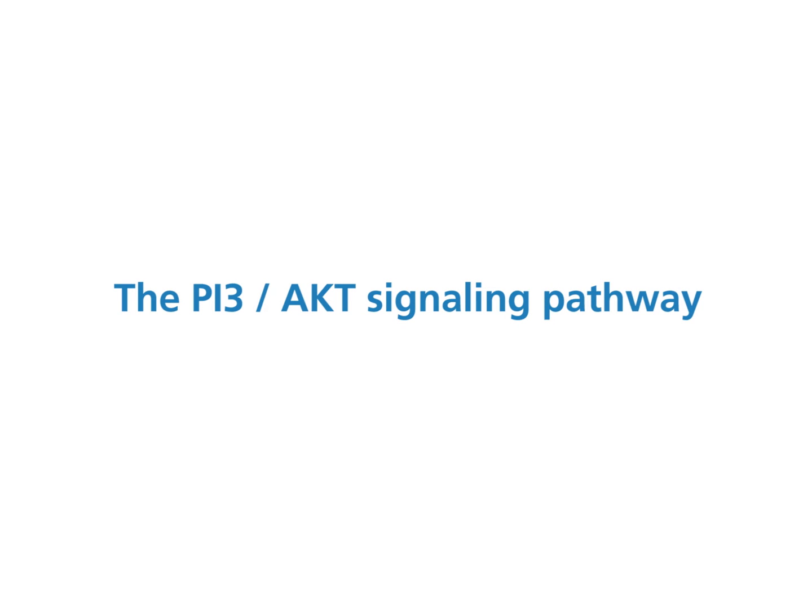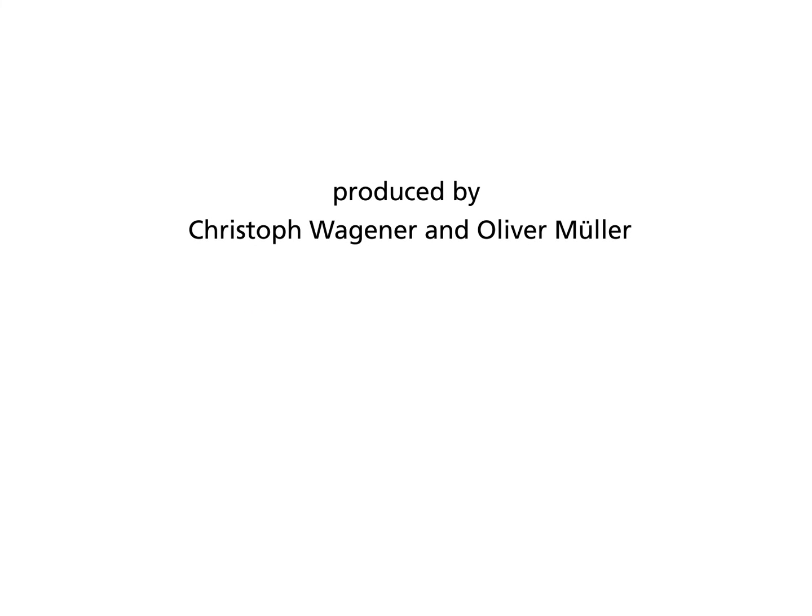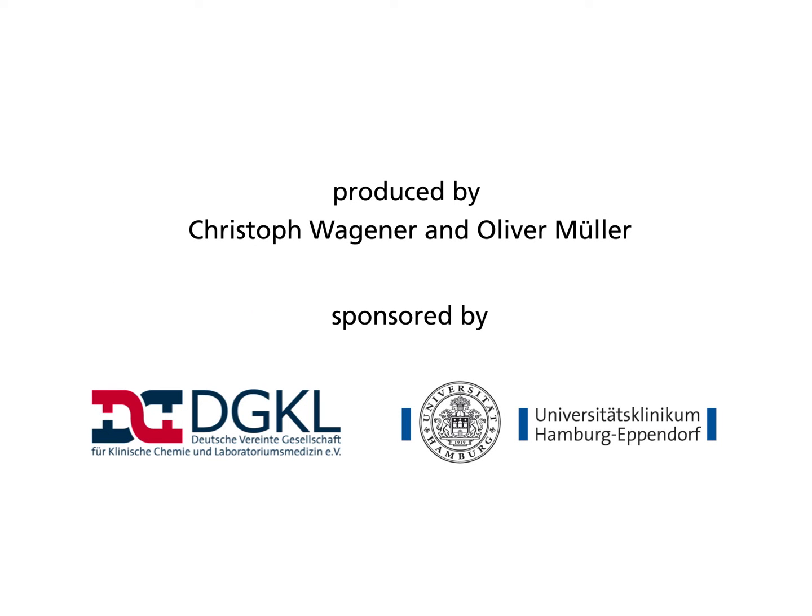The PI3K ACT signaling pathway consists of many activators, inhibitors, effectors, and second messengers. Because of its many loops and branches, the pathway is very complex and far from understood. Here, only the most important circuits will be presented in a simplified way.